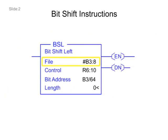The File field contains the address of the register that will be manipulated. The Control field stores the status of the instruction.